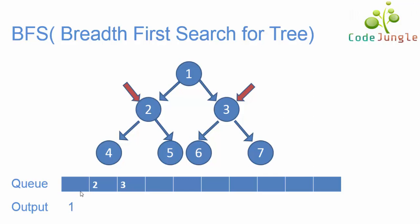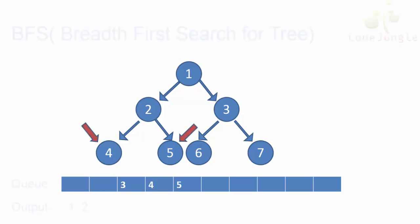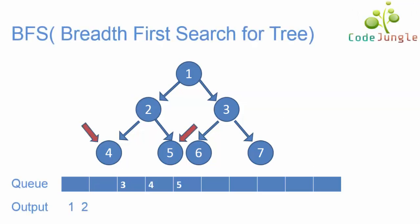Next we check the next element in the queue. The first element is two, so we check which are the child nodes for two. The child nodes for two are four and five. So four and five are pushed into the queue and two is taken out to display in the output.